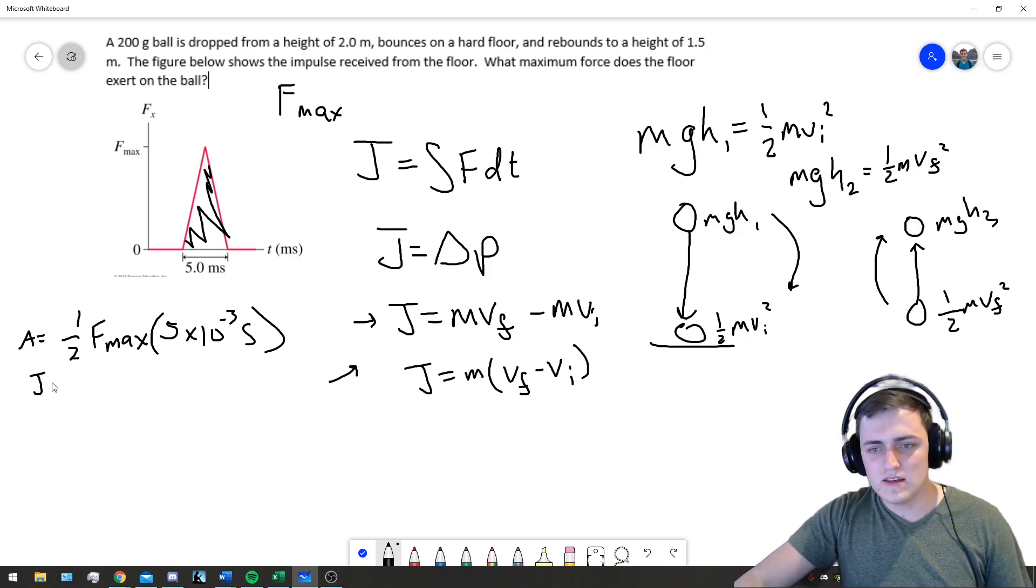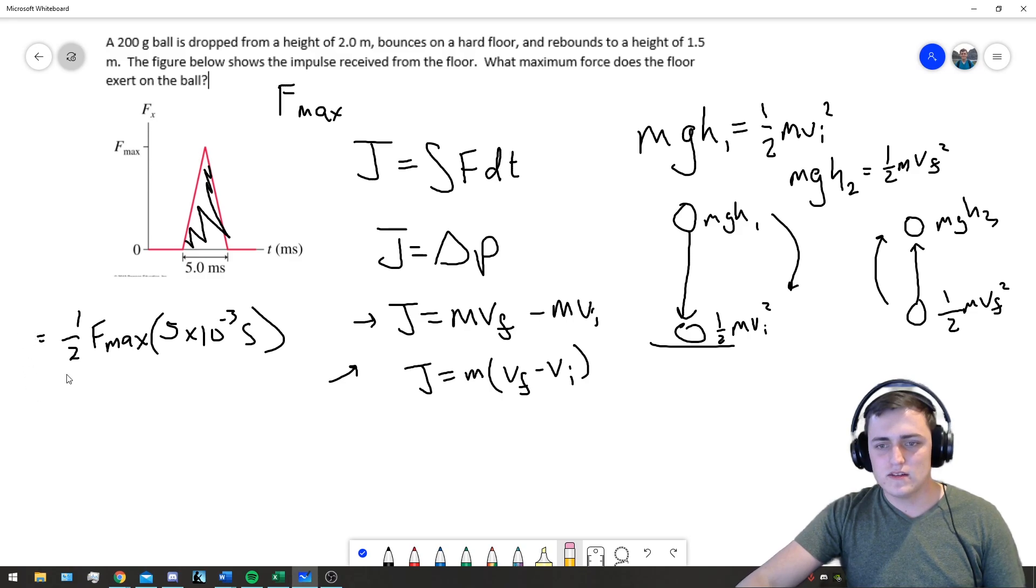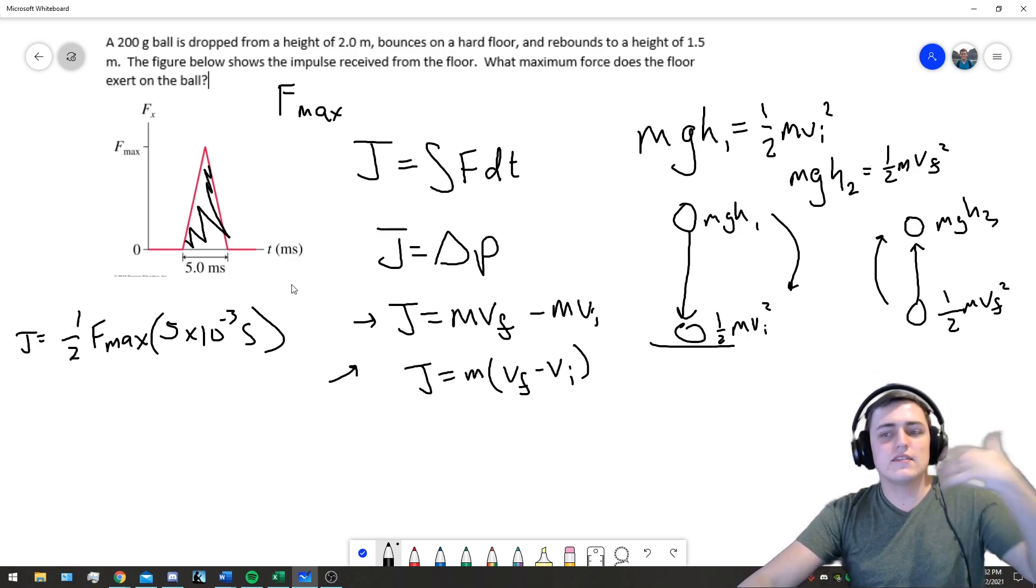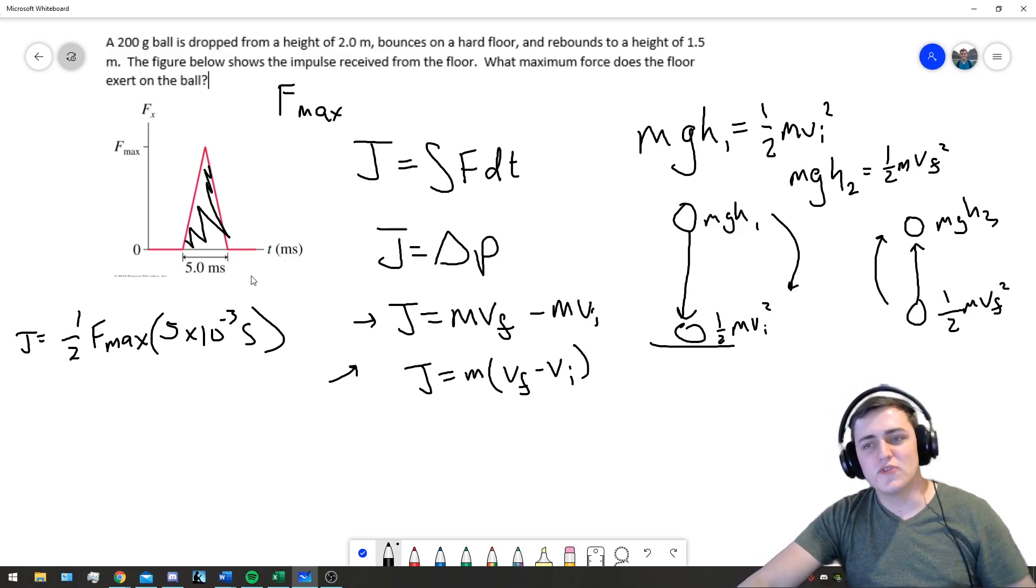J equals one half F_max times that, so these two equations are equal. M times V_final minus V_initial equals one half F_max times 5 times 10 to the minus 3 seconds. That will let us then find F_max, our maximum force.